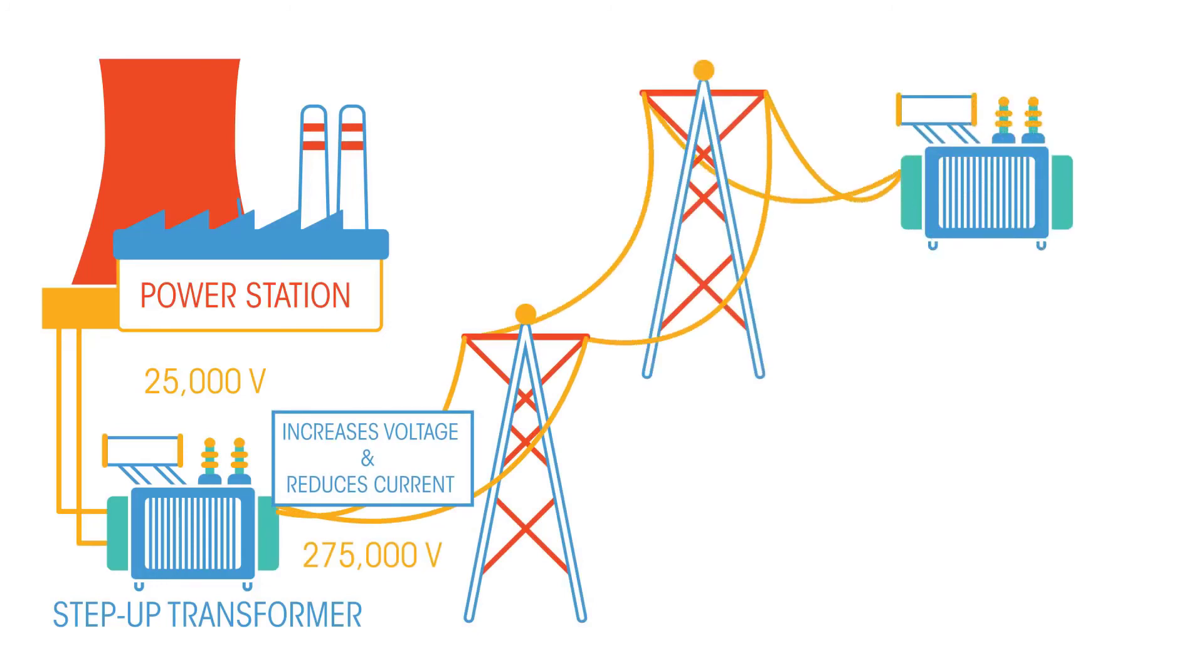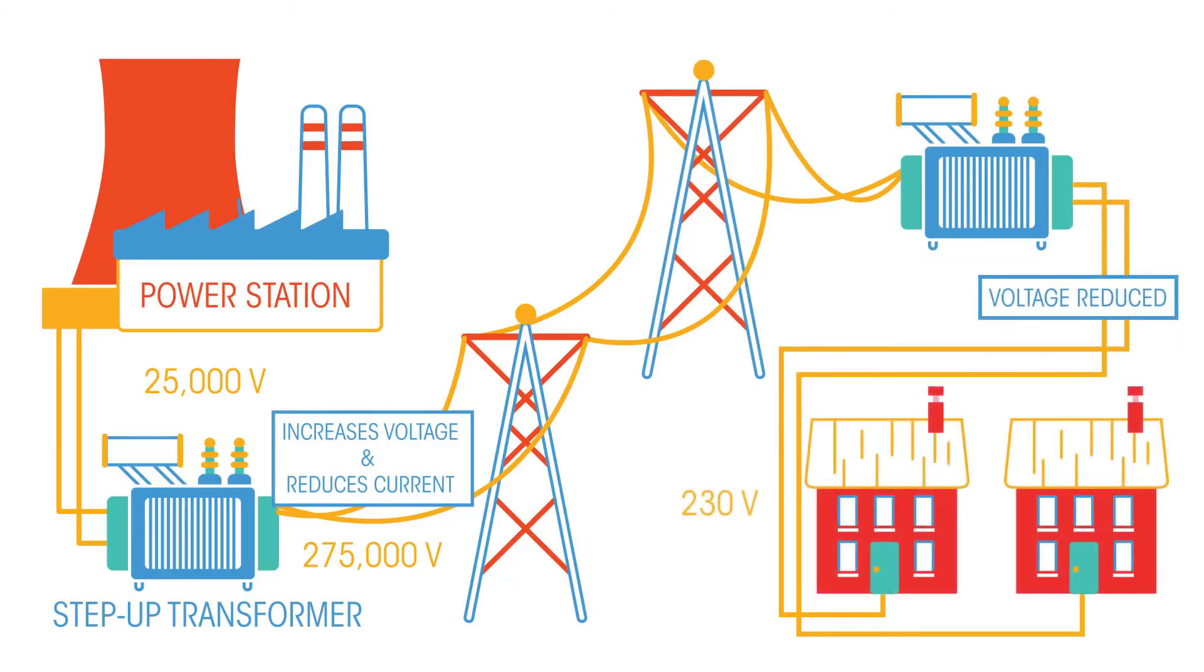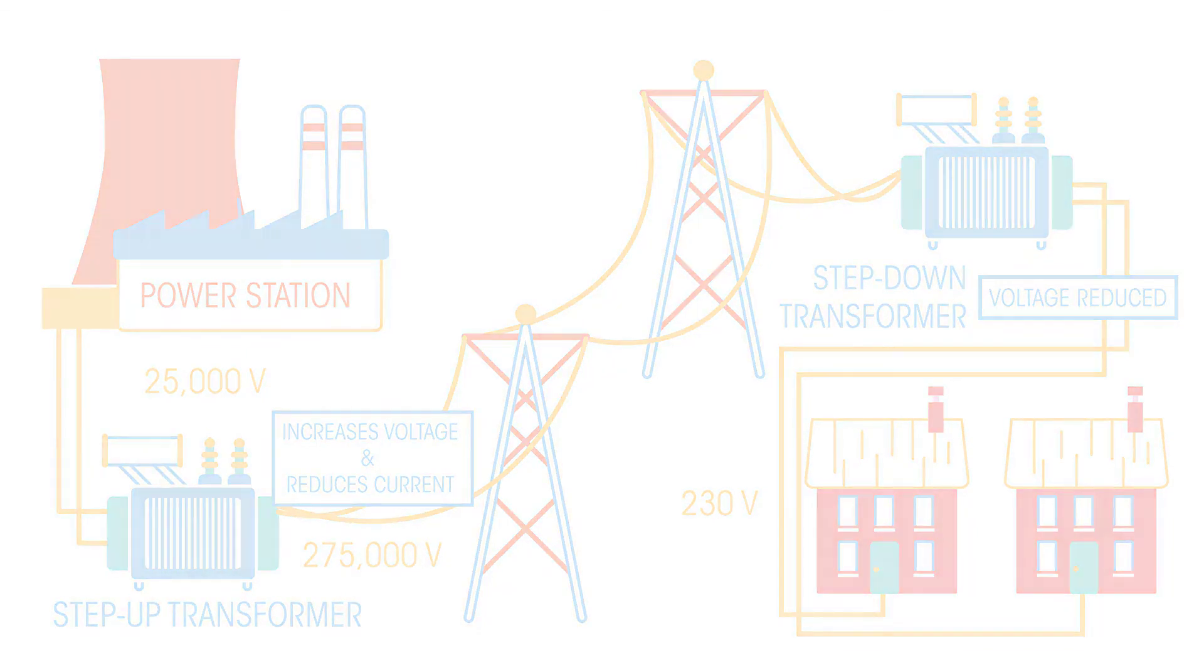Before the electricity gets to our homes, the voltage needs to be reduced back down to a safe level. The electricity therefore passes through a step-down transformer.